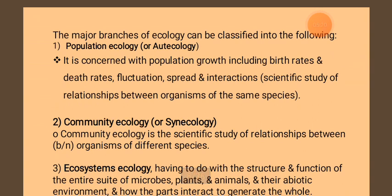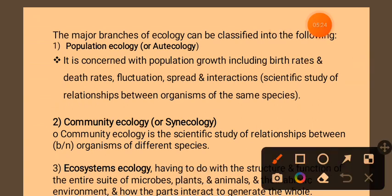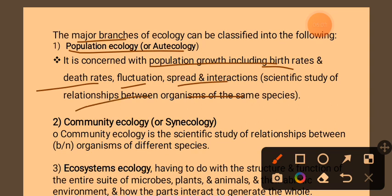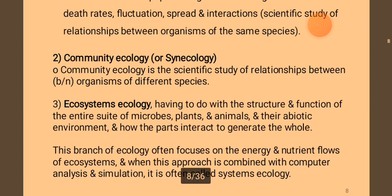Major branches of ecology can be classified in the following ways. Population ecology is concerned with population groups including distribution, fluctuation, spread, interaction and relationship with organisms and species.